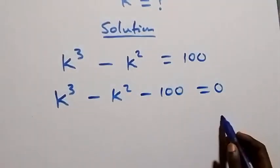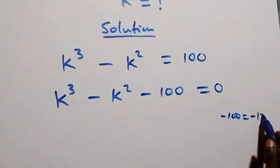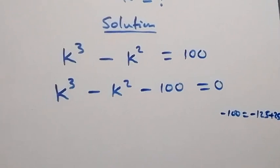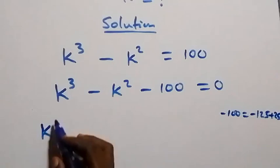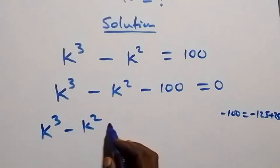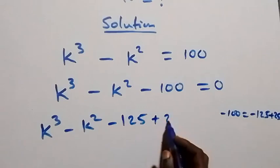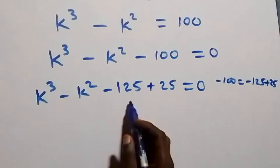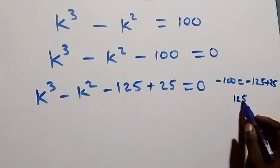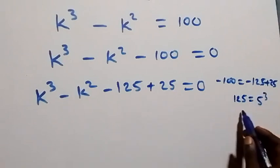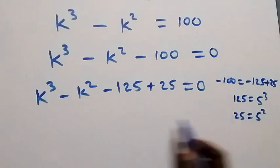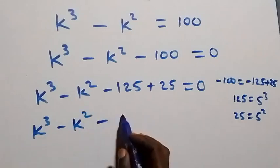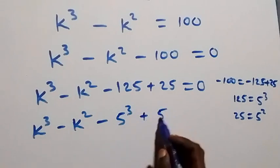Here we can write minus 100 as minus 125 plus 25. This becomes k cubed minus k squared, then minus 125 plus 25, equals zero. From here we can write 125 as 5 raised to power 3, and 25 can be written as 5 squared.